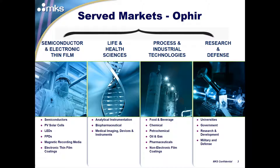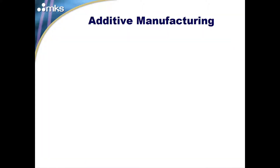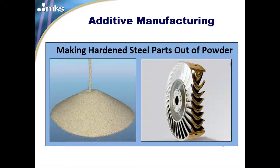Just a quick overview — Ophir is part of MKS, a multinational organization involved in semiconductor, life sciences, and health sciences. Additive manufacturing, which is more commonplace today, is an amazing technology where we take various types of sophisticated powders and make hardened steel parts. It's a process where we build up from nothing, unlike milling from a piece of steel, and it's a more complex yet simplified process than previous techniques.